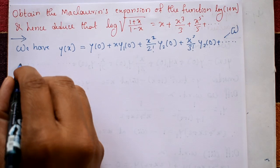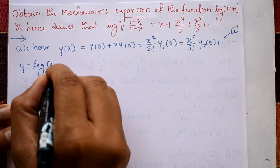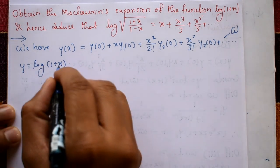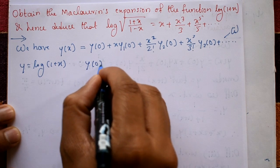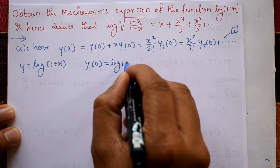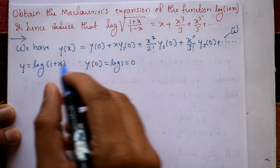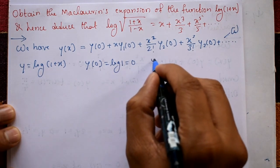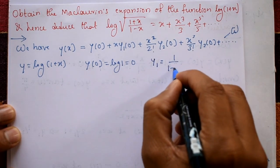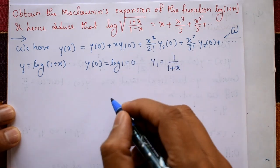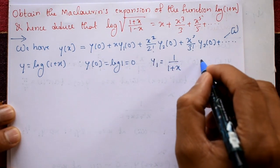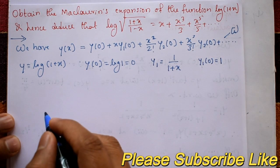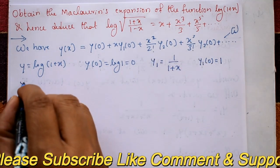Consider y = log(1+x). Put x = 0: y(0) = log(1) = 0. Now differentiate to get y₁ = 1/(1+x). Put x = 0: y₁(0) = 1/1 = 1.